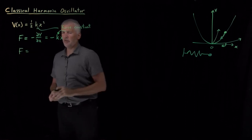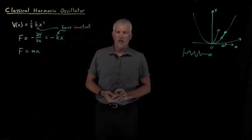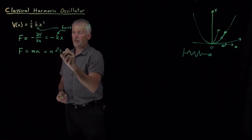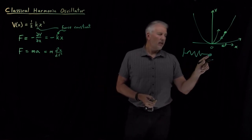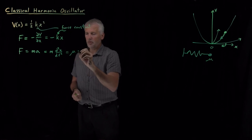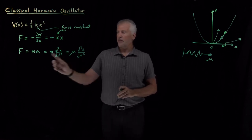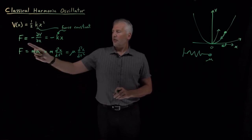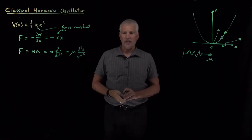Now we've started talking about force and equations you may have last seen in a physics class. The relevant equation is F = ma, or mass times the second derivative of position with respect to time. For the harmonic oscillator, we typically use the reduced mass μ instead of m, so we write: F = μ · d²x/dt². This is our version of Newton's second law with the reduced mass. We now have two expressions for force: F = −kx and F = μ · d²x/dt².